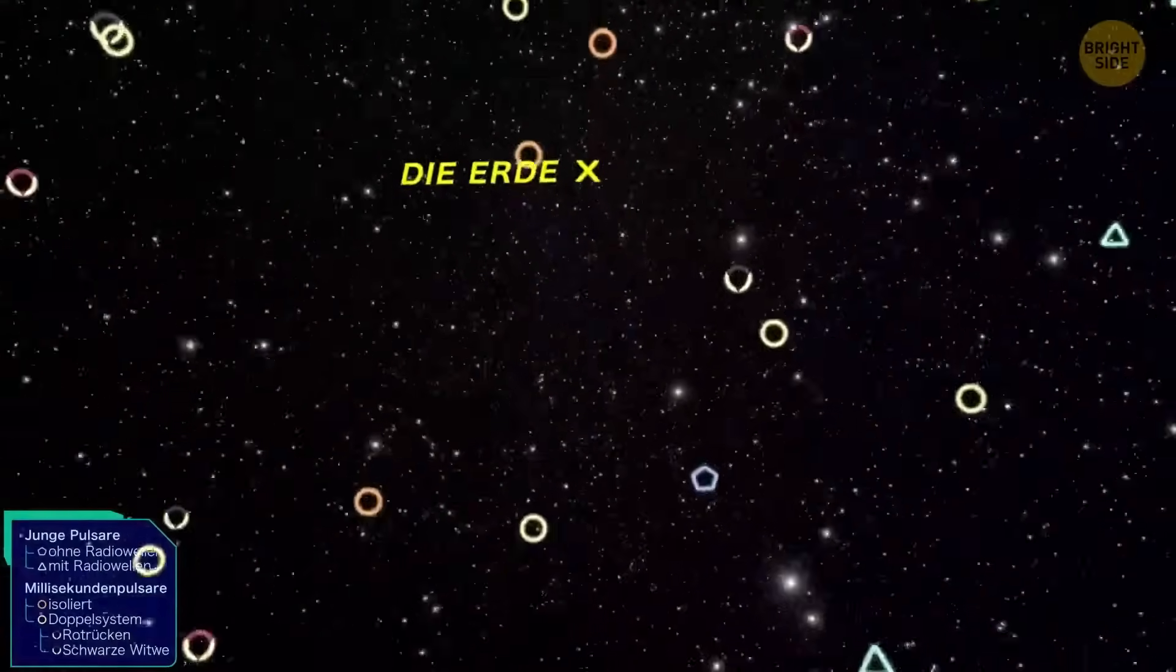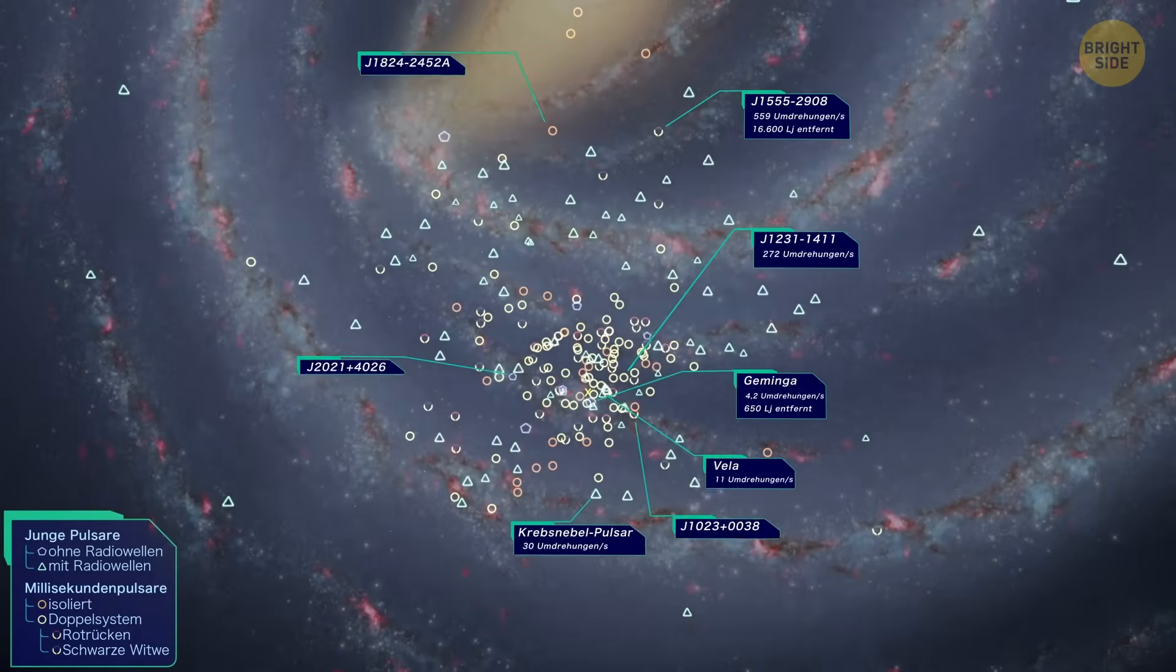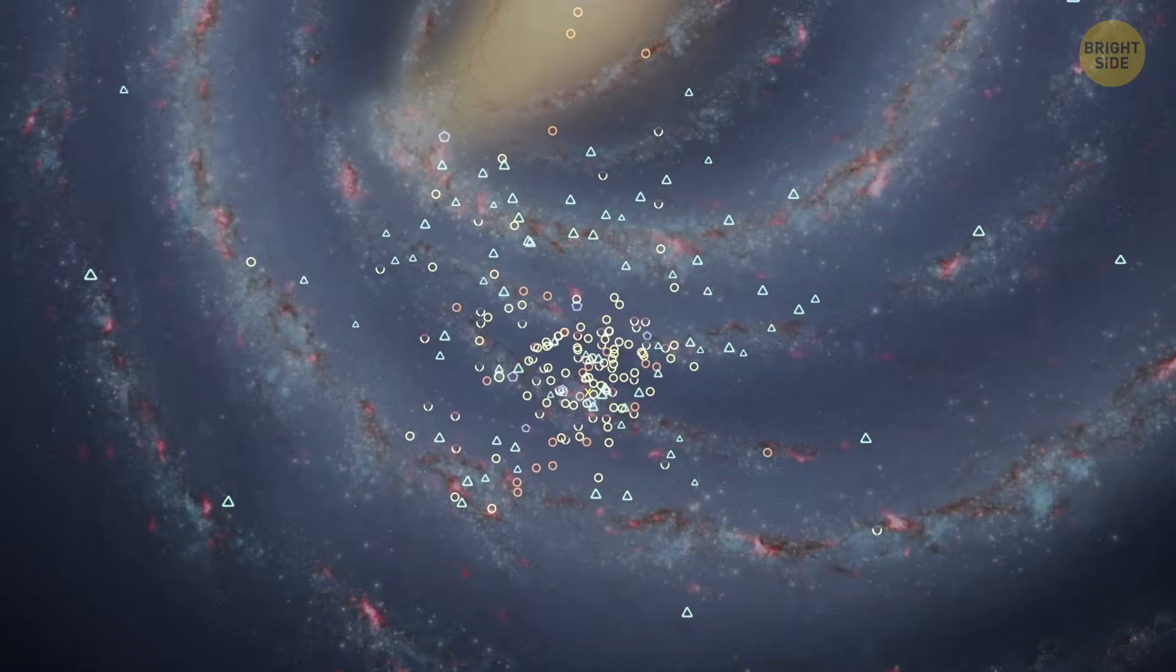For example, things like weird motion in binary systems, or stars that eject material in weird, unnatural ways. They could all mean that there's some technology being used there.